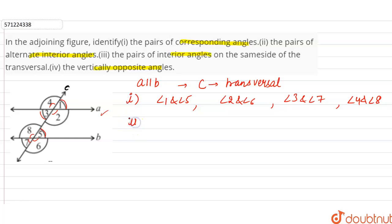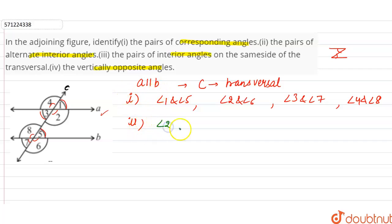In the second part, we find the pairs of alternate interior angles. Alternate interior angles make a Z shape — the two lines are parallel and one is the transversal, with angles on opposite sides. The alternate interior angle pairs are angle 2 and angle 8, and angle 3 and angle 5. You can observe that 2 and 8 make a Z shape.